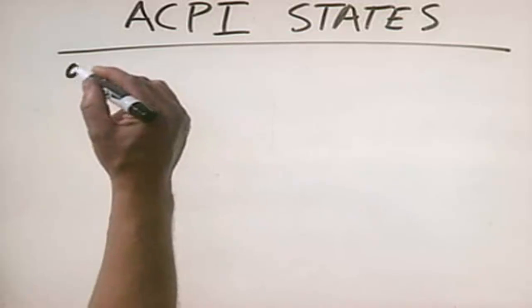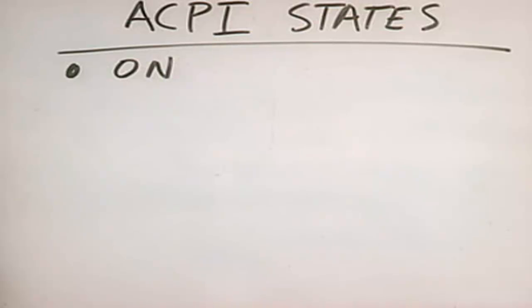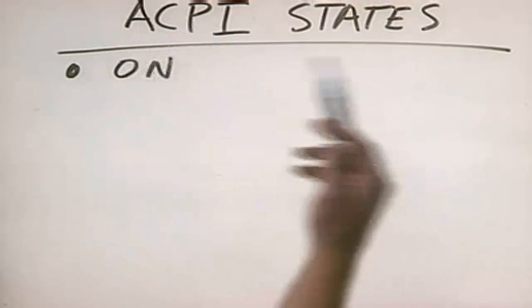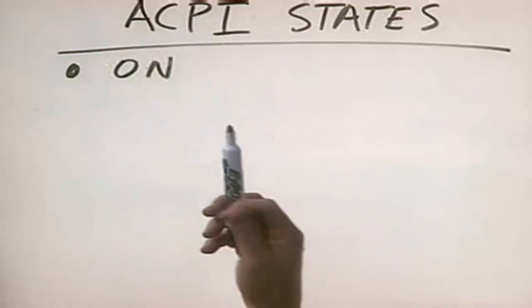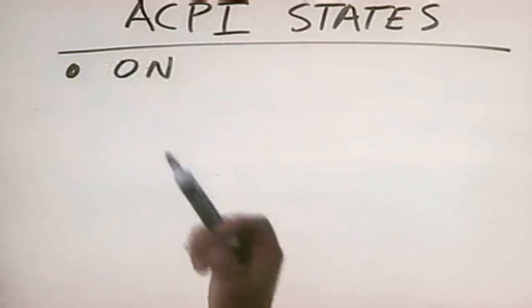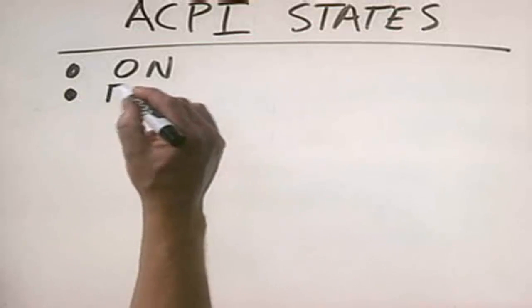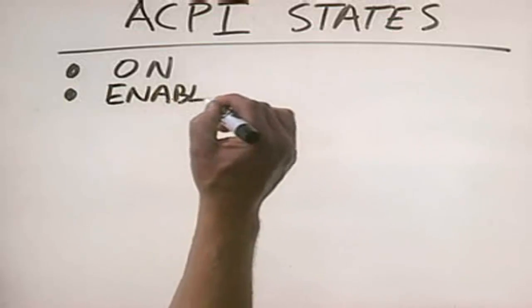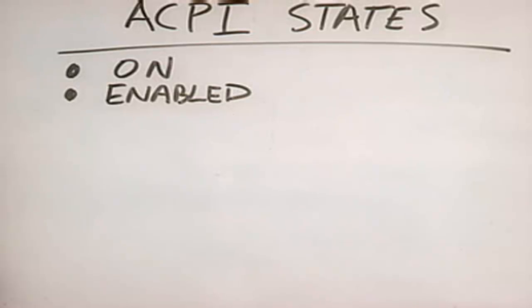ACPI defines several different power states. The first is On. In the On state, all power management functions are off — all devices, the CPU, the hard disk drive, peripherals — everything is running at full power, and no power management is taking place. The next state is Enabled. In the Enabled state, power management is turned on, but no devices are shut down. Everything's still running at full power.